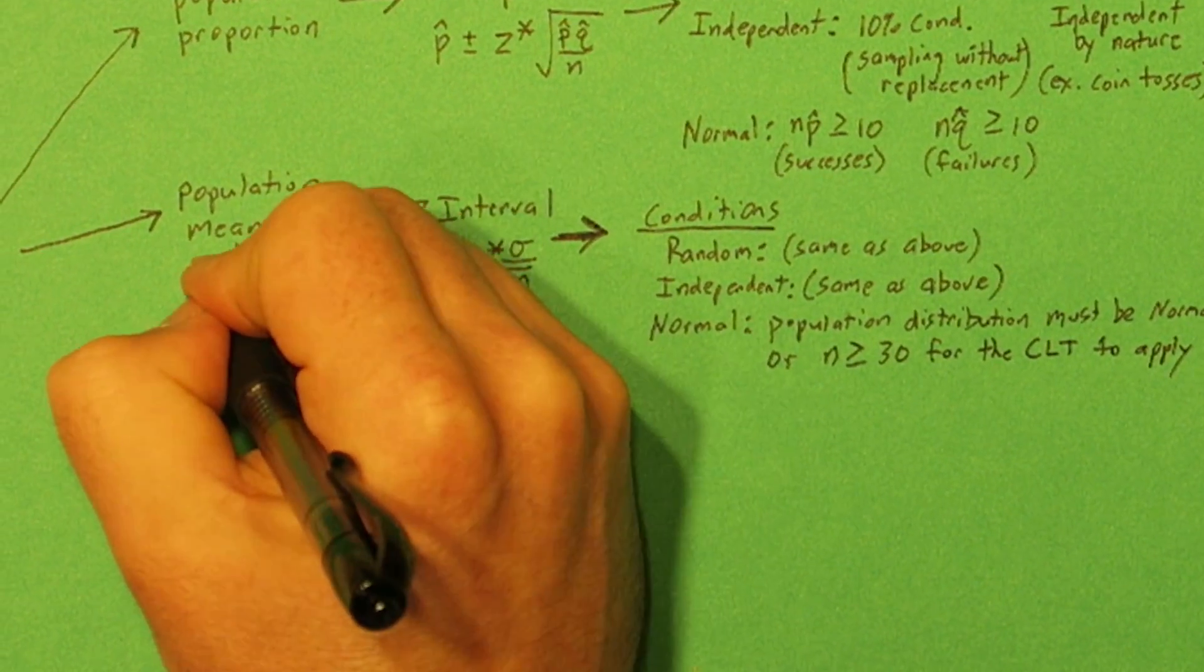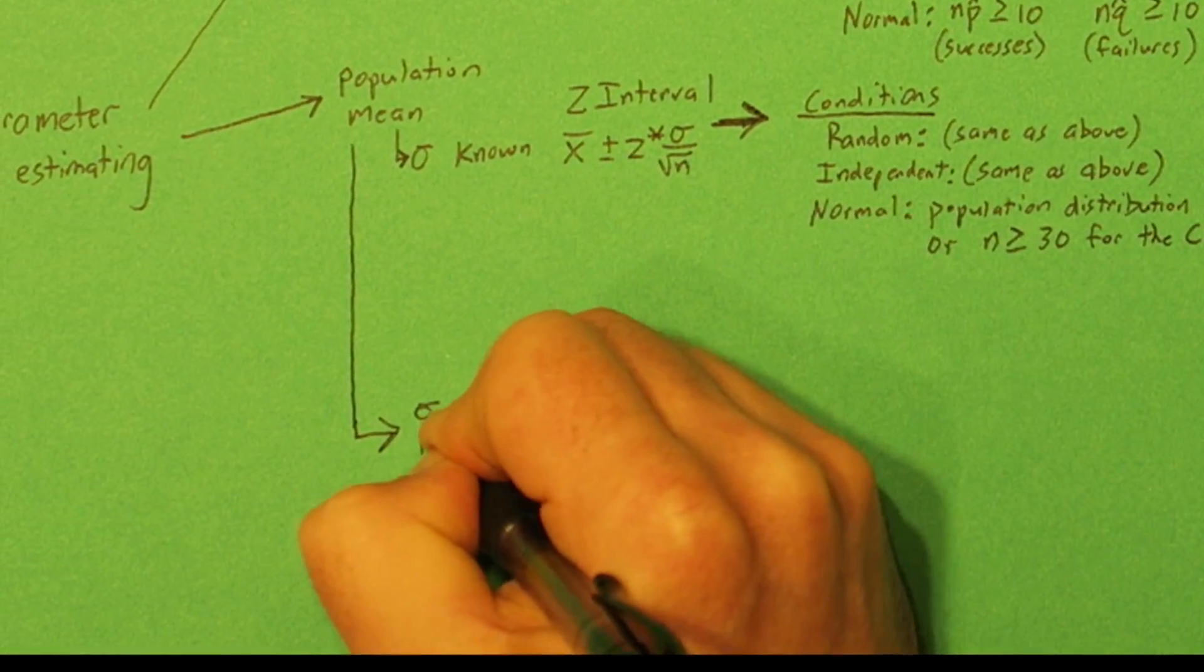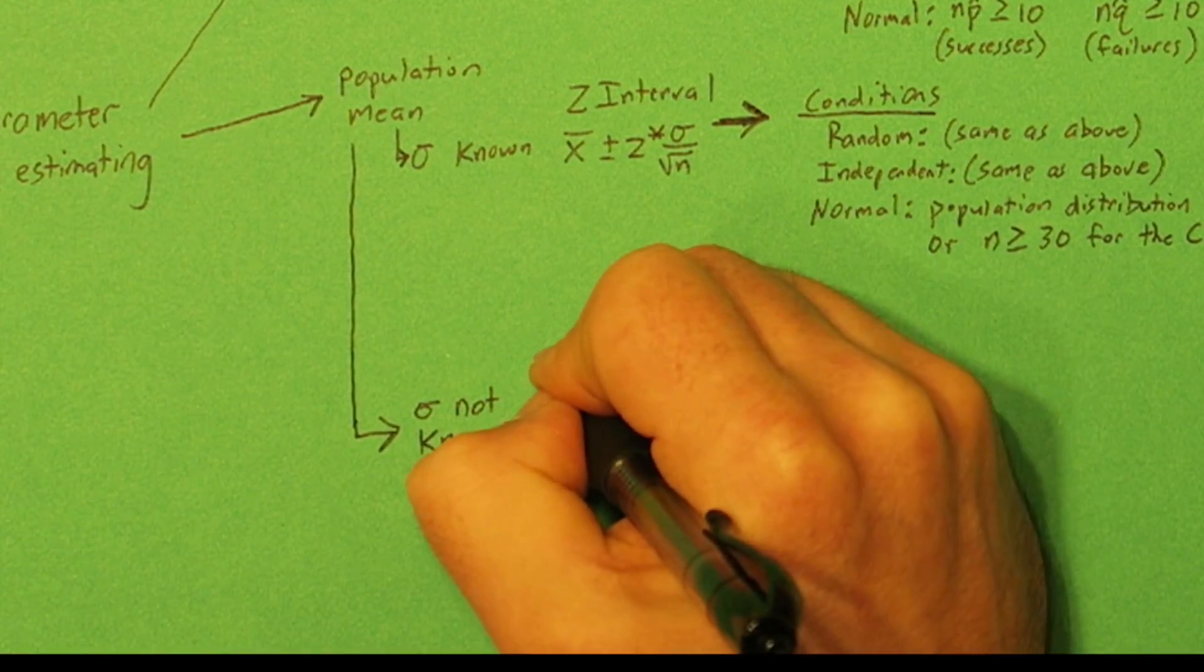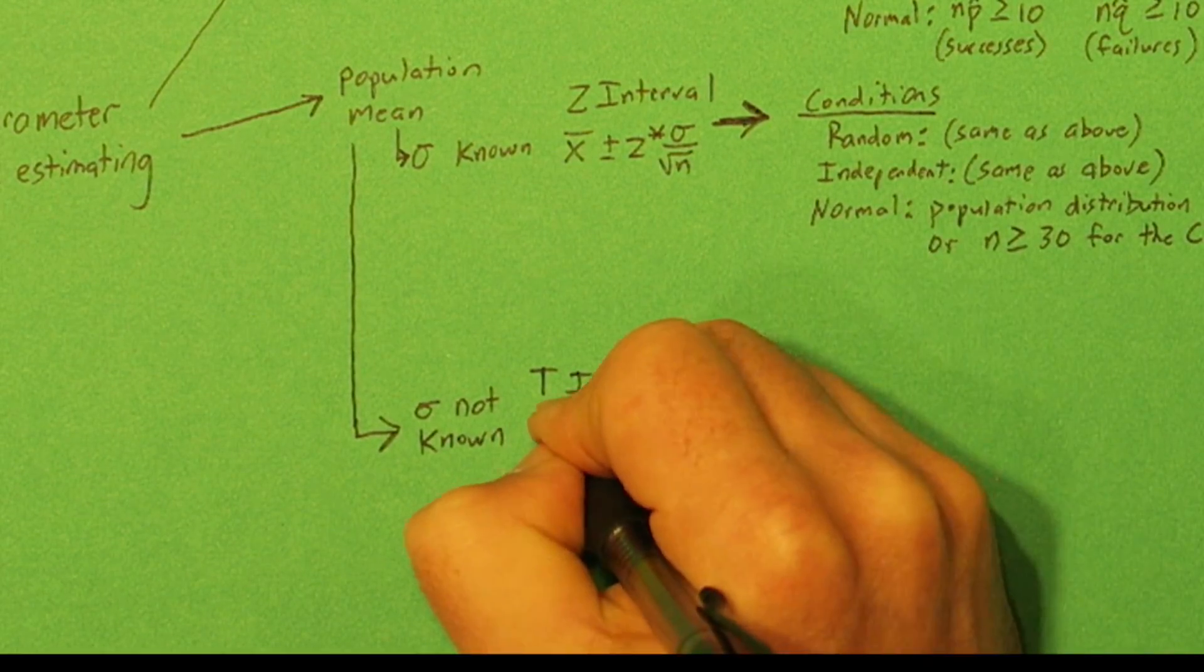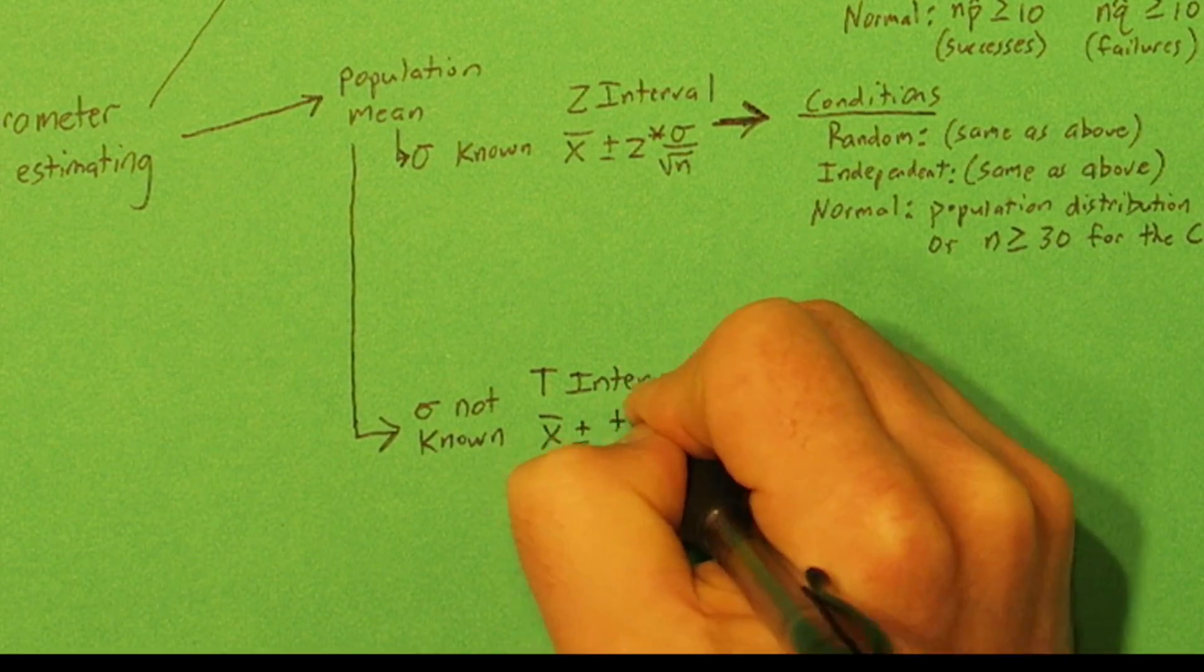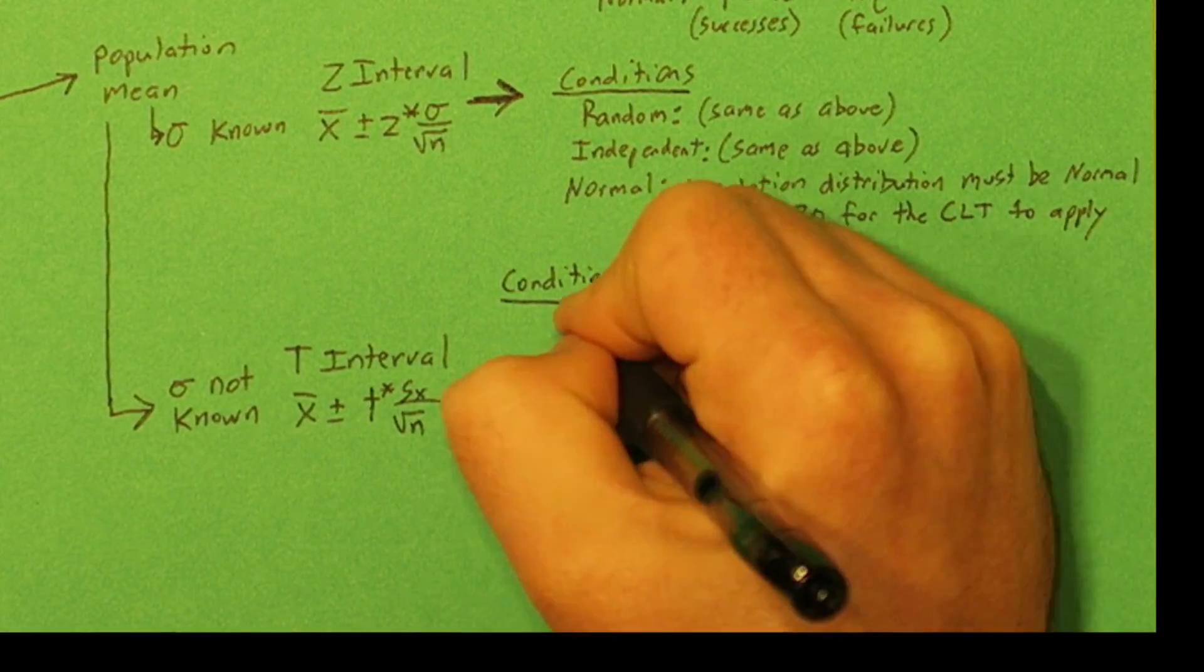Now if sigma is not known, if you don't know the population standard deviation, you can still use a t interval. That takes x-bar, the sample mean, add and subtracts t star times s sub x over the square root of sample size.